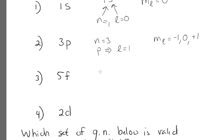We'll keep going. The 5f, n equals five. The first number means the n value. F refers to what l is. So f tells you that l equals three. And when l equals three, your possible m sub l values are from negative three to positive three, counting one at a time. Negative two, negative one, zero, one, two, three.